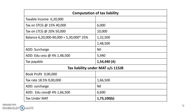Surcharge is nil since taxable income is below 1 crore. Surcharge of 2% applies only when taxable income is more than 1 crore and less than 10 crores. Education cess is 4% on 1 lakh 48,500, giving cess of 5,940. Total tax payable under the normal method is 1 lakh 54,440.